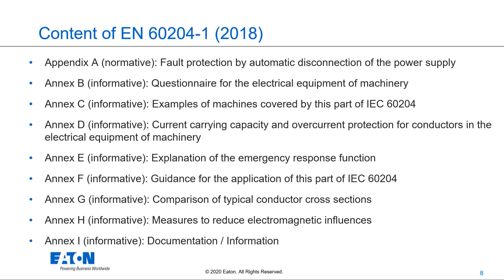EN 60204-1 has a large number of appendixes. Appendix A covers fault protection by automatic disconnection of the power supply. Appendix B is a questionnaire for the electrical equipment of machinery. Annex C gives examples of machines covered by this standard. Annex D covers the current-carrying capacity of overcurrent protection for conductors in the electrical equipment of machinery.